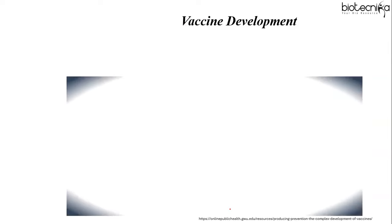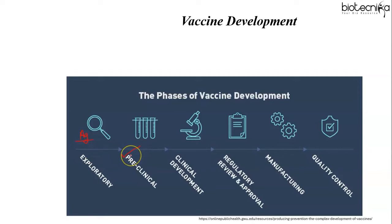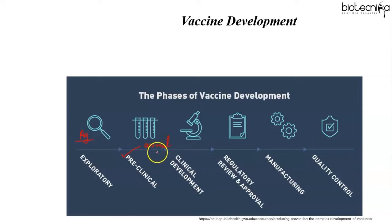How are vaccines developed? There are different phases of vaccine development. The very first phase is exploratory — a research-intensive phase designed to identify natural or synthetic antigens that might help prevent or treat a disease, including weakened strains of a particular virus. The second stage is preclinical, during which researchers in private industry use tissue culture or cell culture systems and animal testing to determine whether the candidate vaccine will produce immunity. Many candidate vaccines don't move to the next stage because they fail to produce immunity or prove harmful to test subjects.